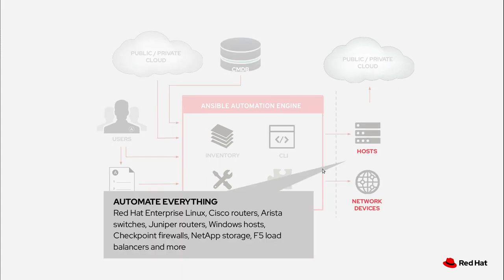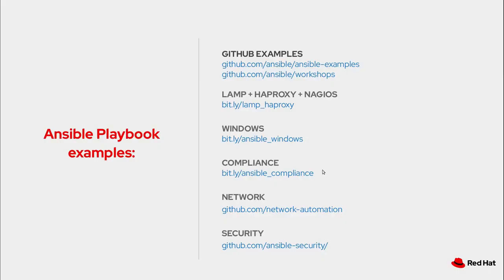Automating everything - it is the language of the enterprise covering network stuff and all that. We've got example playbooks for Windows, compliance, and when I say compliance, I do mean the STIGs - we write those in conjunction with DISA and then publish them. We've also got a lot of good networking stuff, including actually backing up your devices. You can run a playbook to back them up every hour - one of the things you get in Ansible Tower is like a cron: say every hour, run a backup.